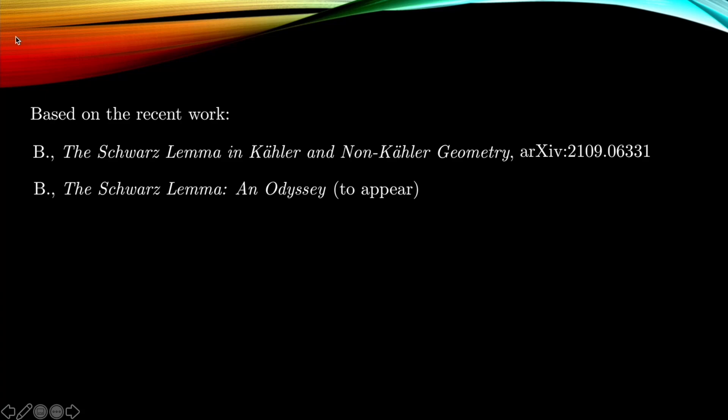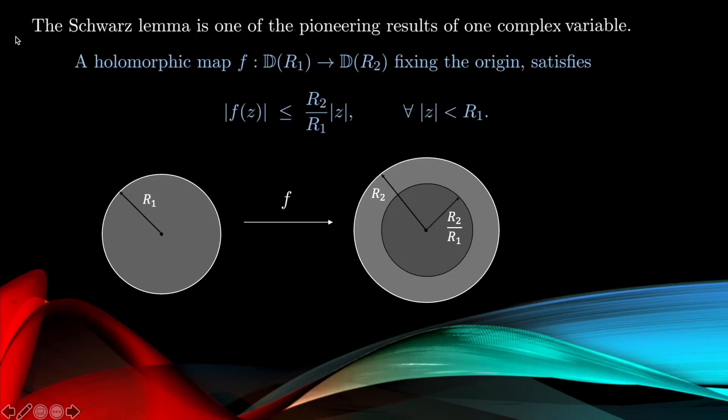The expository notes built from this lecture material are to be found in a paper appearing very shortly, titled 'The Schwarz Lemma in Odyssey.' The Schwarz lemma is one of the pioneering results of the function theory of a single complex variable.